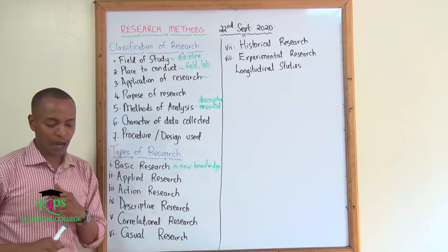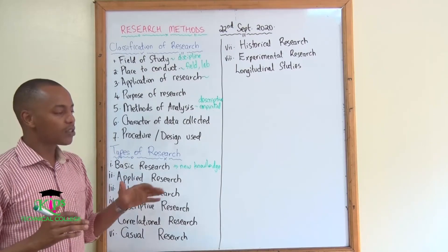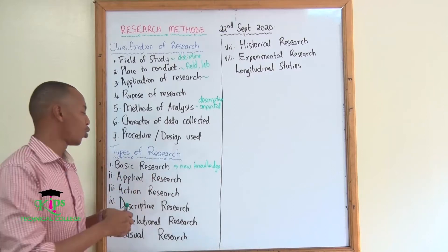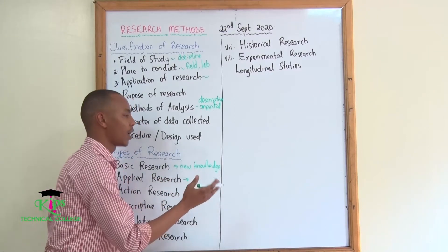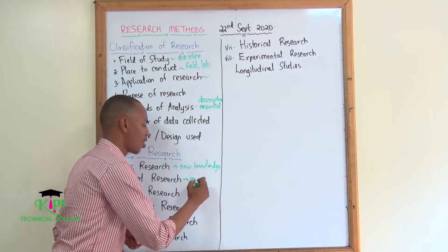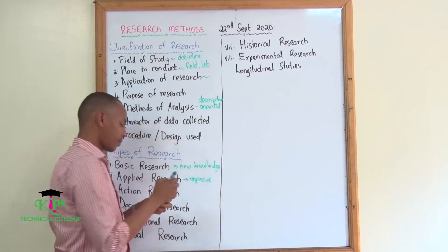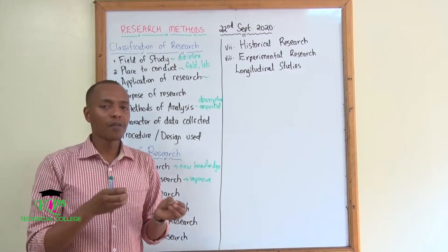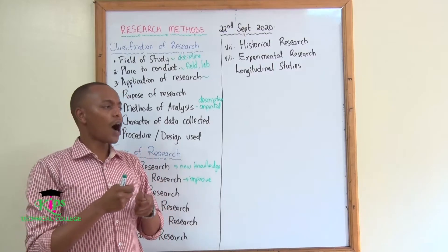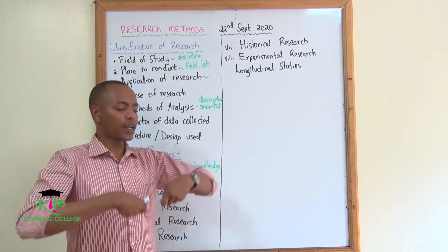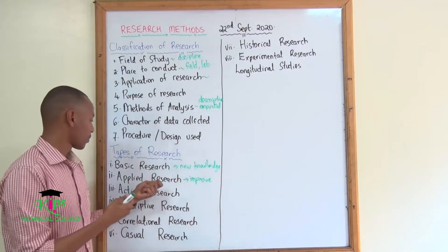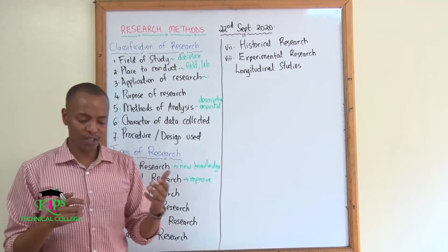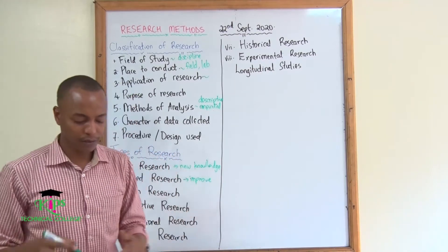What about applied research? Applied research is usually applied so that you can improve on whatever is already there. There are a number of theories that people might have suggested on how to carry out things, and applied research helps us to improve on what has already been talked about.